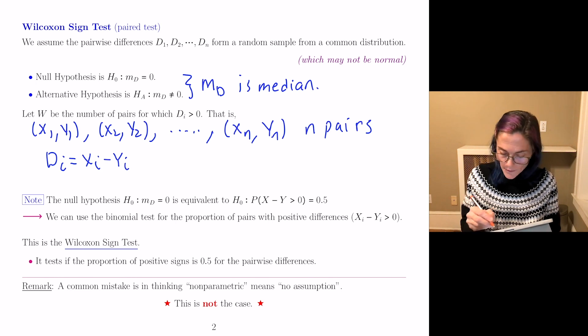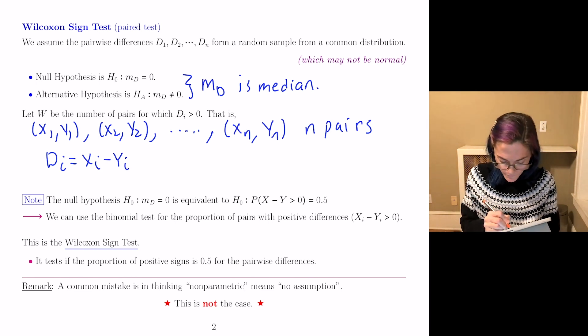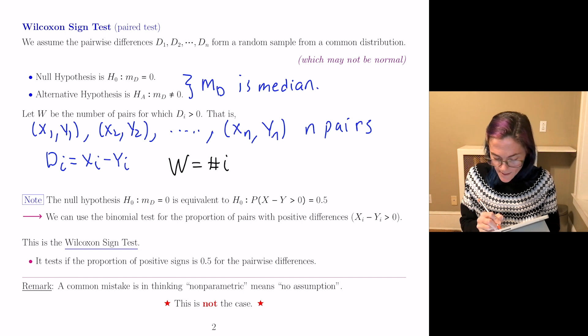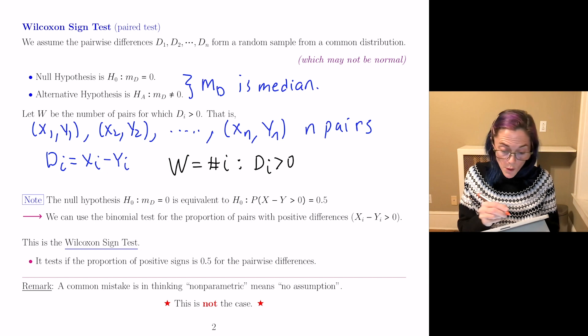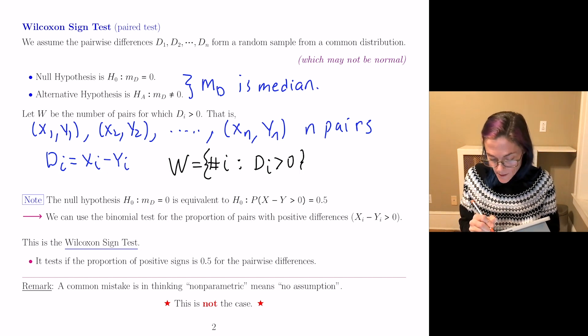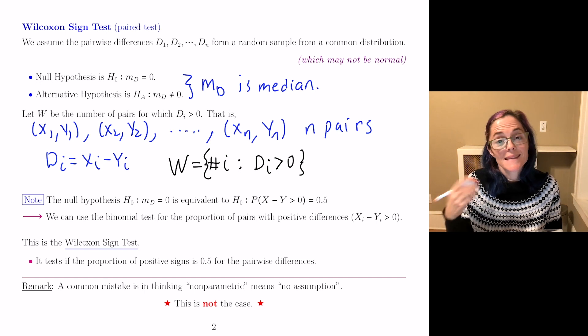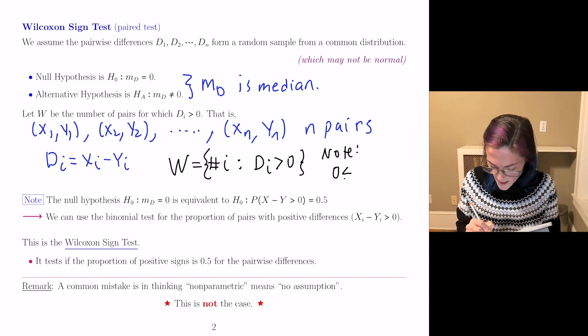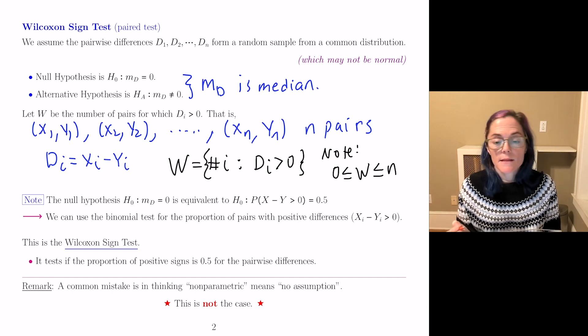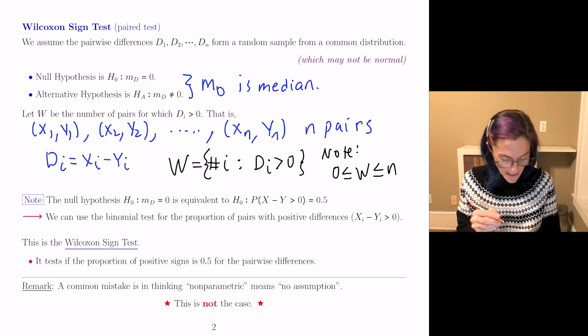And so capital W is the number of i such that Di is positive. You notice that this number is between zero and n, this capital W. Maybe I should write this, that zero is less than or equal to W is less than or equal to n.